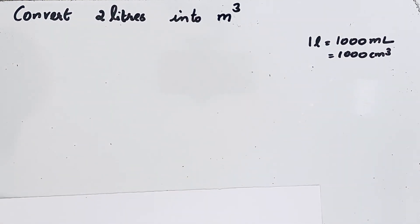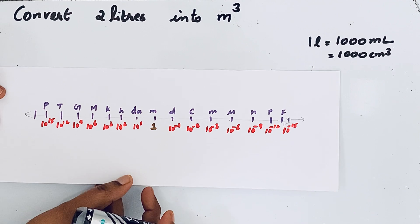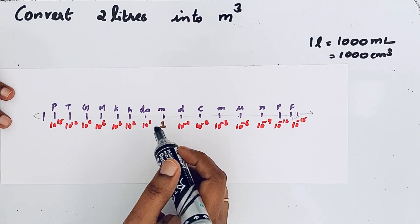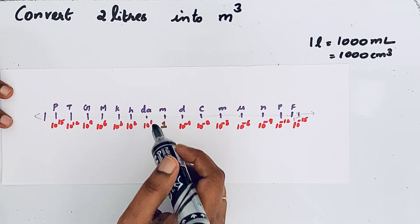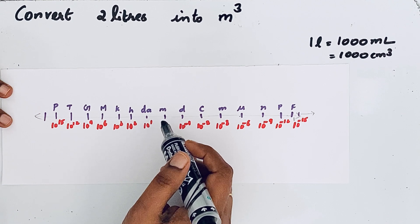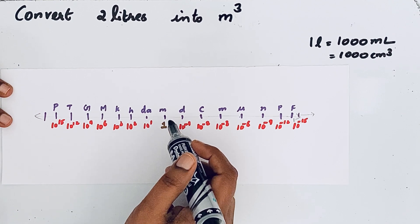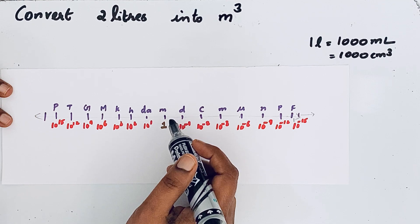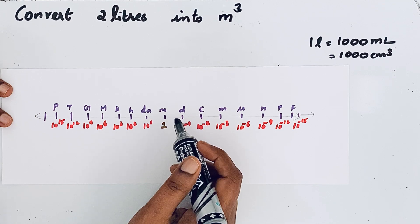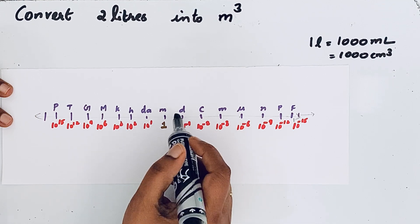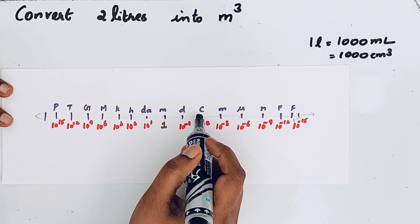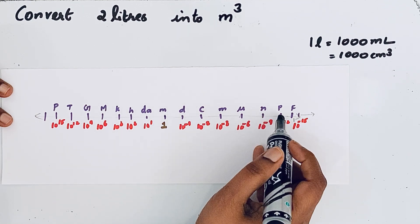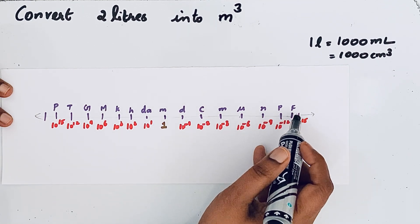To convert liters into meter cube, let us use this number line system. In the center you can see meter, which is the base unit of length. Then there are some multiples and submultiples: decimeter, centimeter, millimeter, micrometer, nanometer, picometer, and spectometer.